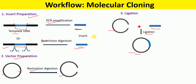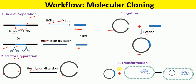In the next step, we take this ligation mixture and transform competent cells such as E. coli with this ligation mixture, and that results in the formation of transformed bacteria. We then need to check that the bacteria has taken up the correct clone and not the incorrect clone.